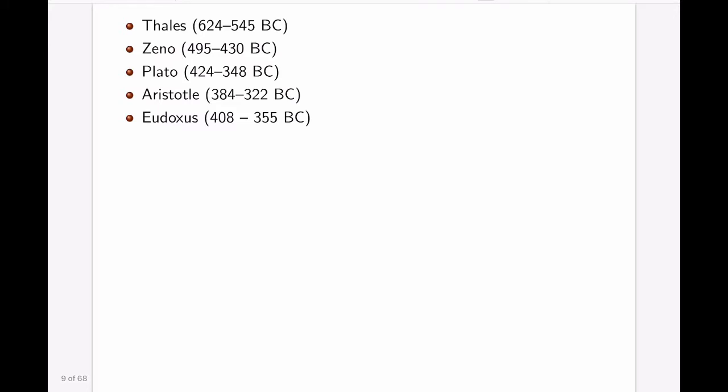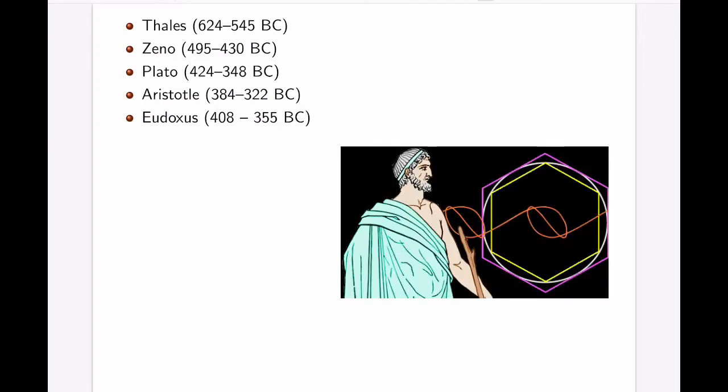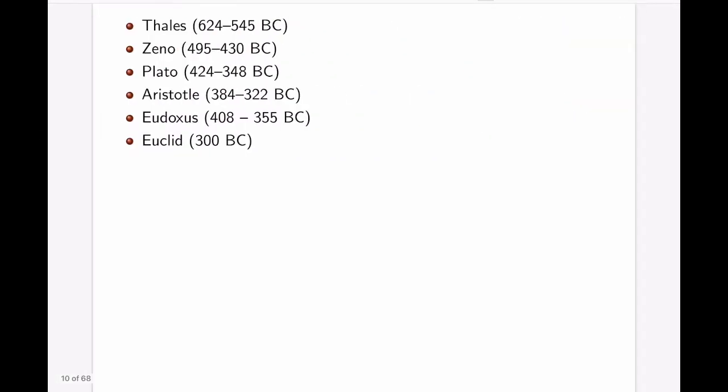Eudoxus is not the name that you hear as much as, let's say, Plato and Aristotle, but he is considered to be one of the greatest philosophers in classical Greek mathematics. He is the source of most of Book 5 of Euclid's Elements on proportions and so on. He is the one that developed the method of exhaustion that is, in some sense, the very foundations of integral calculus. We have, of course, talked about Euclid, and we will talk about Archimedes in a lot more detail.